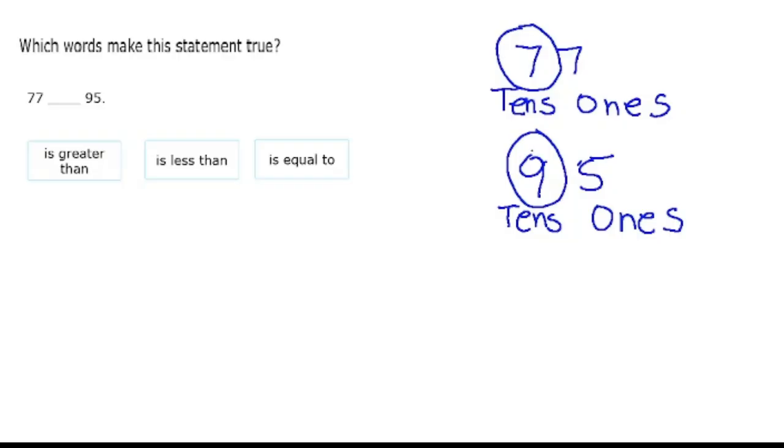We know that this whole number is less than this whole number. The answer to this question, which words make this statement true? 77 is less than 95.